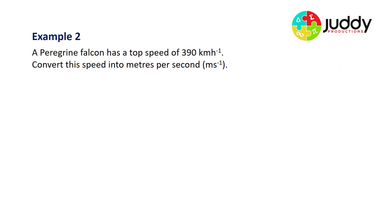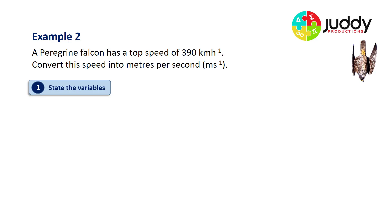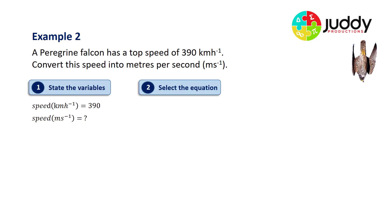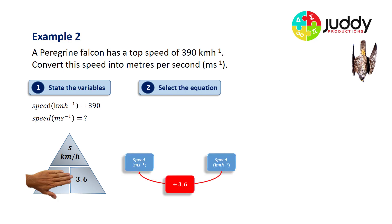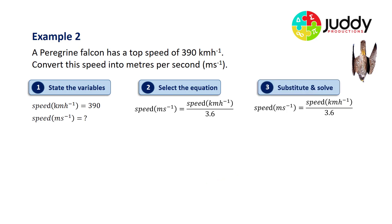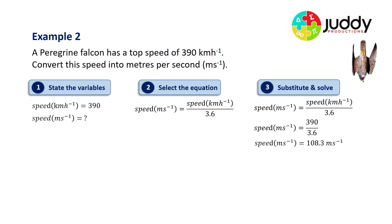Example two: a Peregrine Falcon has a top speed of 390 kilometres per hour — pretty quick for a bird. Convert this to metres per second. State the variables: speed in km/h is 390. Select the equation using the triangle approach: speed in m/s equals speed in km/h divided by 3.6. Substituting and solving: 390 divided by 3.6 gives the Peregrine Falcon a top speed of 108.3 metres per second.